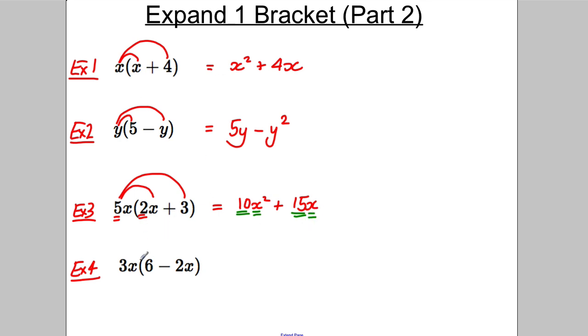OK, 3X multiplied by 6, well, that's going to be 18X. 3X multiplied by negative 2X. So, 3 multiplied by negative 2 is negative 6. X multiplied by the X gives me X squared. So, there are the 4 examples.